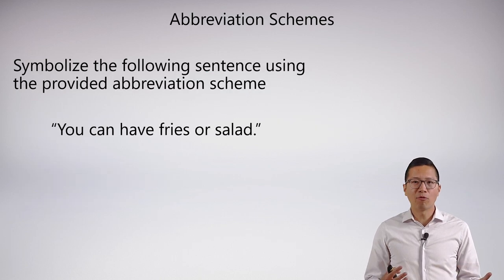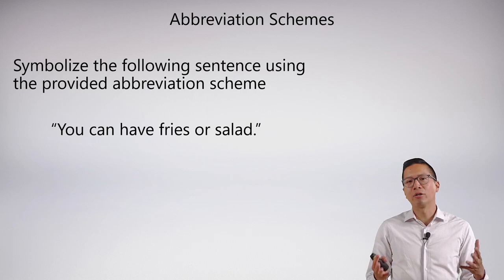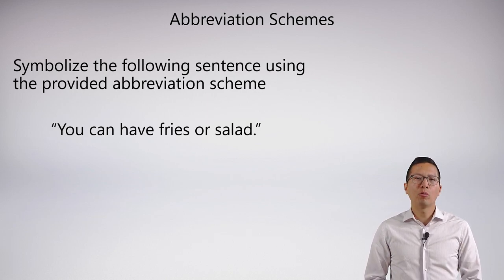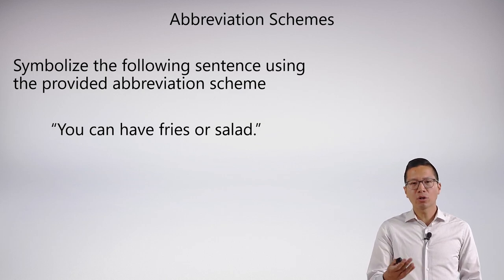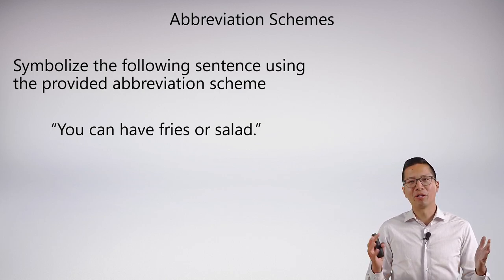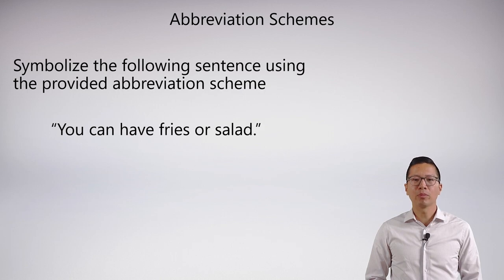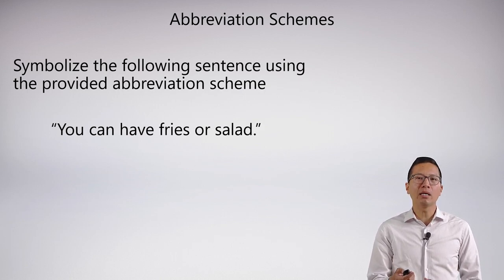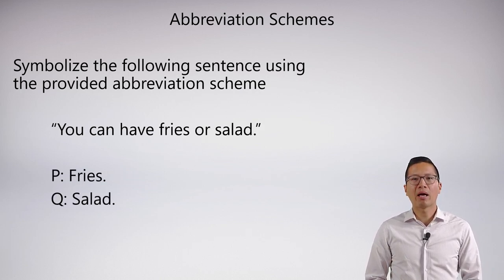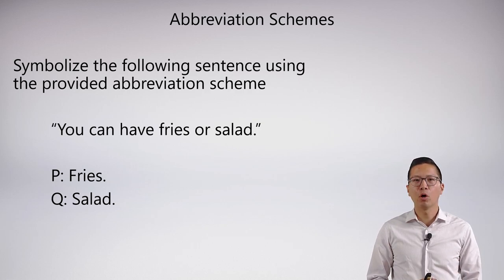As I mentioned before, what we're missing is how do we know what letters to symbolize? What we need is something called an abbreviation scheme. Here is a question that you might see on a test — well, this is actually way too basic for a test, but it's the basic setup. It says: symbolize the following sentence using the provided abbreviation scheme: 'You can have fries or salad.' So the abbreviation scheme is missing here. What I need is something that tells me what letters to use — so I would have something that says P is fries, Q is salad.